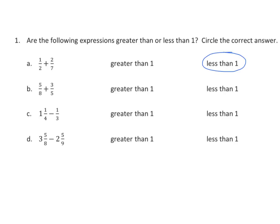Looking at B, we know that 5 eighths is greater than half — 4 eighths is half, so 5 eighths is greater than half. And 2 and 5 tenths would be the numerator representing a half here. We know that 3 is greater than half of 5, so we have 2 fractions that are greater than 1 half. If we're adding 2 fractions greater than 1 half, our sum will be greater than 1.